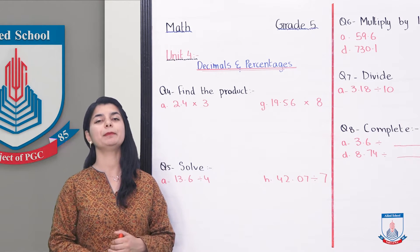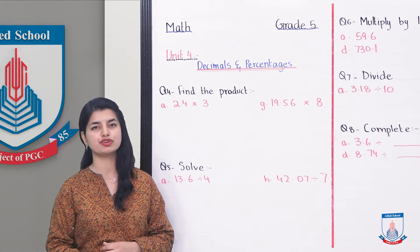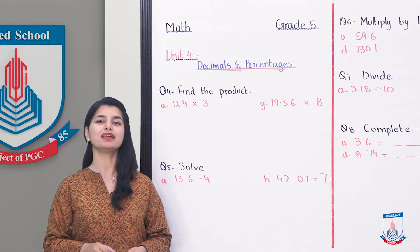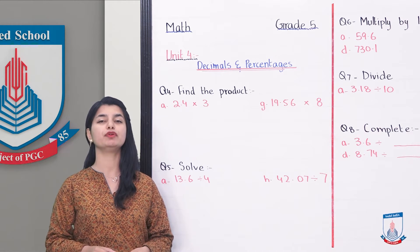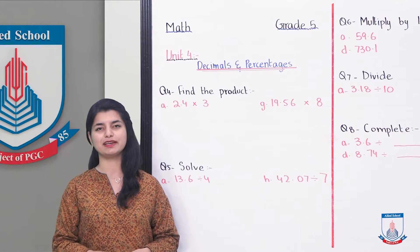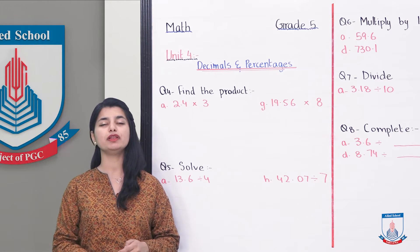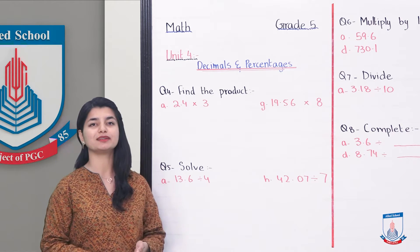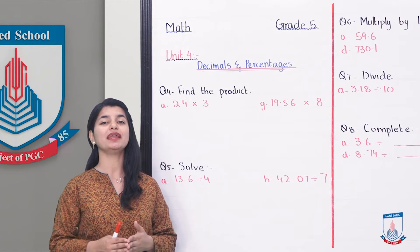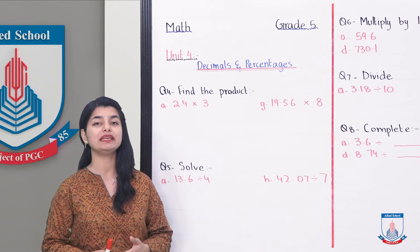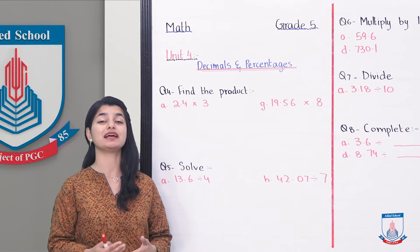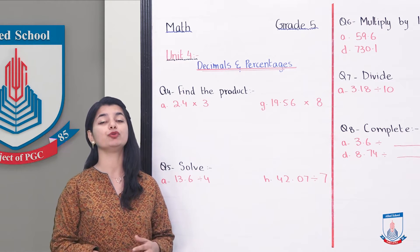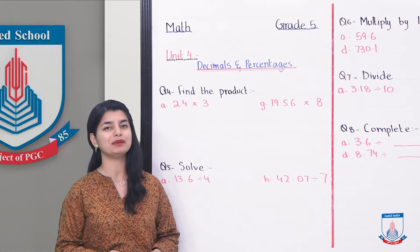Exercise 4B had some questions that we addressed in the previous lecture. Today, we will complete the rest of the questions from question number 4. So, if you look at question number 4 — find the product. What does finding the product mean? It means multiplying the numbers that are given to you. So, the digits you have been given, you have to multiply.